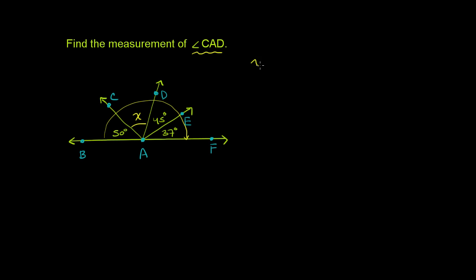Because we have x, x plus 50—50 in orange—plus 45, plus 37 is going to be equal to 180 degrees.